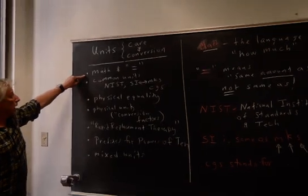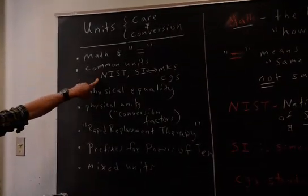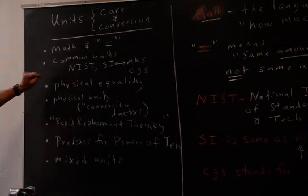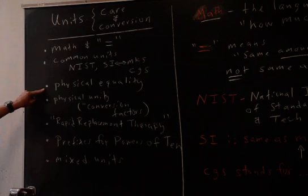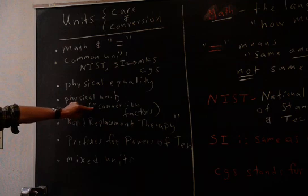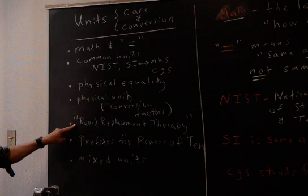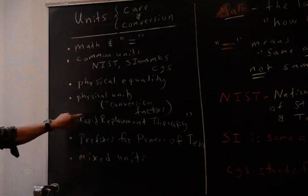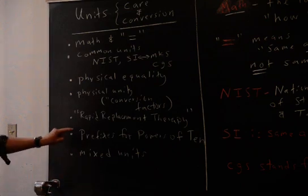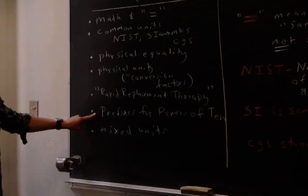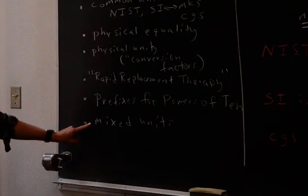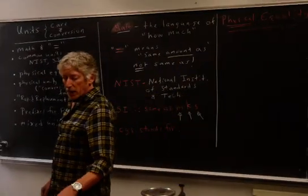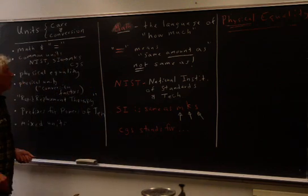The topics are going to be math inequalities very quickly, common units, and we'll talk about the NIST SI system — also the CGS system and the American Standard System. Physical equality is a term I kind of coined. Physical unity, also known as conversion factors from chemistry. Rapid replacement therapy is another term I coined — it makes things easier and can save you some ink. Prefixes for powers of ten — you should know them, commit them to memory — and mixed units. You may have notes posted as a PDF online or in a notes packet from the bookstore.